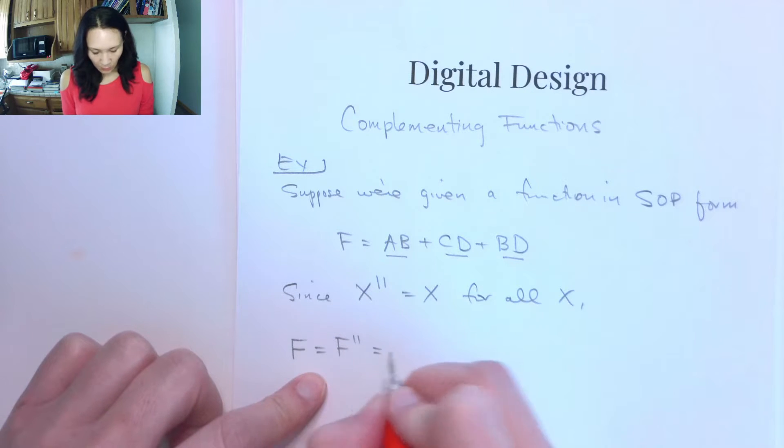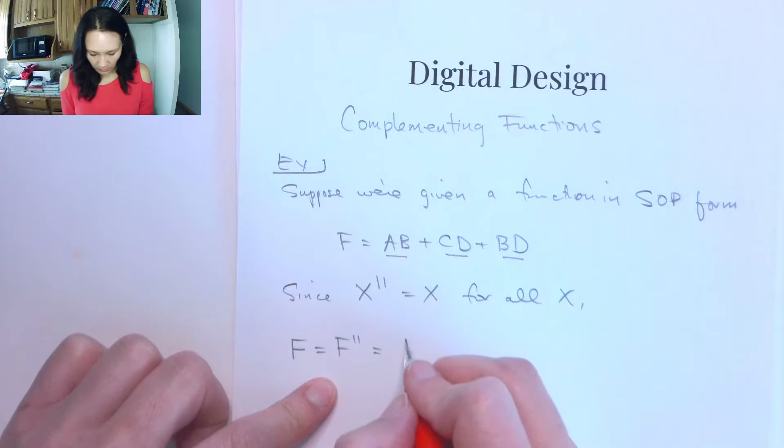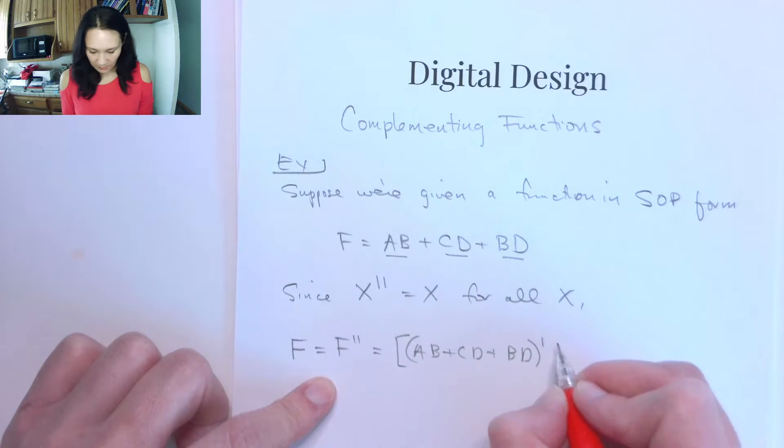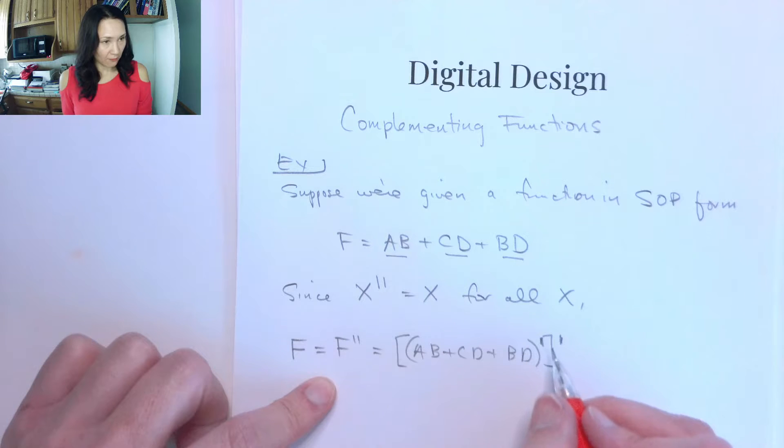And by double complementing it, now we have some complements to work with. So our original function AB or CD or BD, we can use an inner complement and then we can keep that outer complement. So I have the two, my double complement for F kind of separated out into two steps here.